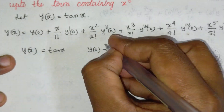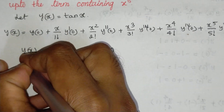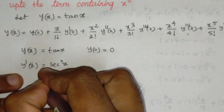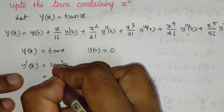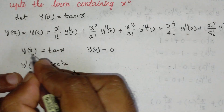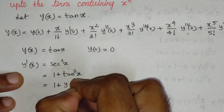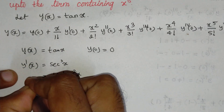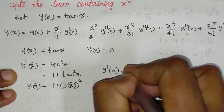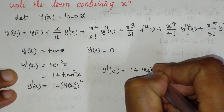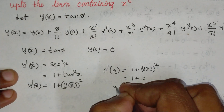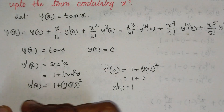Let y(x) = tan(x). Then y(0) = sin(0)/cos(0) = 0. The first derivative y'(x) = sec²(x), which we can write as 1 + tan²(x) = 1 + [y(x)]². So y'(0) = 1 + [y(0)]² = 1 + 0 = 1.